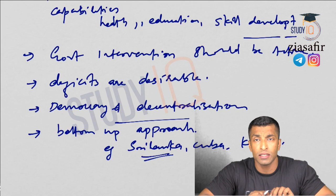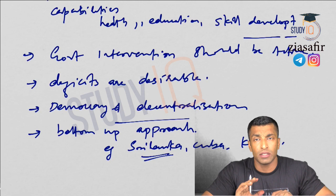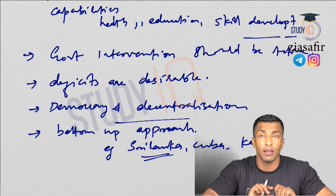So, in Amartya Sen's model the focus is on enhancing human capabilities, and economic growth will automatically follow. Social expenditure is desirable, which means fiscal deficit is desirable, because government must invest in the social side for overall well-being — which is ultimately every government's objective.